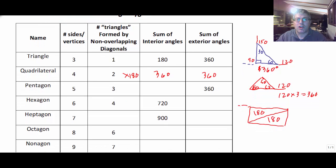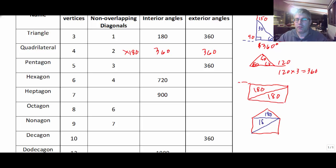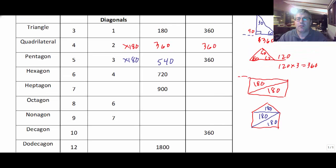I can keep going down my chart. A pentagon, a five-sided figure, has three non-overlapping triangles. If I draw my pentagon and cut it up into triangles, I now have three triangles. The sum of each one of those triangles is 180 degrees, so three times 180 equals 540 degrees. And you might be able to tell from my chart that no matter how many sides a polygon has, the sum of the exterior angles is going to be 360.